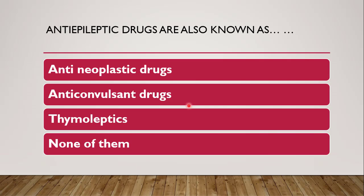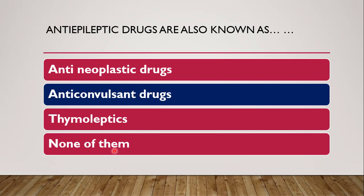The first MCQ: anti-epileptic drugs are also known as dash. Whether they are known as anti-neoplastic drug, anti-convulsant drug, thymoleptics, or none of them. The correct answer is anti-convulsant drug, which we just discussed — anti-epileptic drugs are also known as anti-convulsant drug.